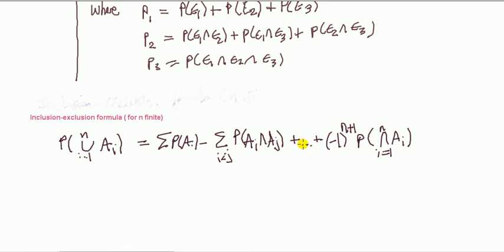Plus, and then it'll be intersections of three events, combinations of, and then it'll be minus. And you get the idea. So it alternates between pluses and minuses.